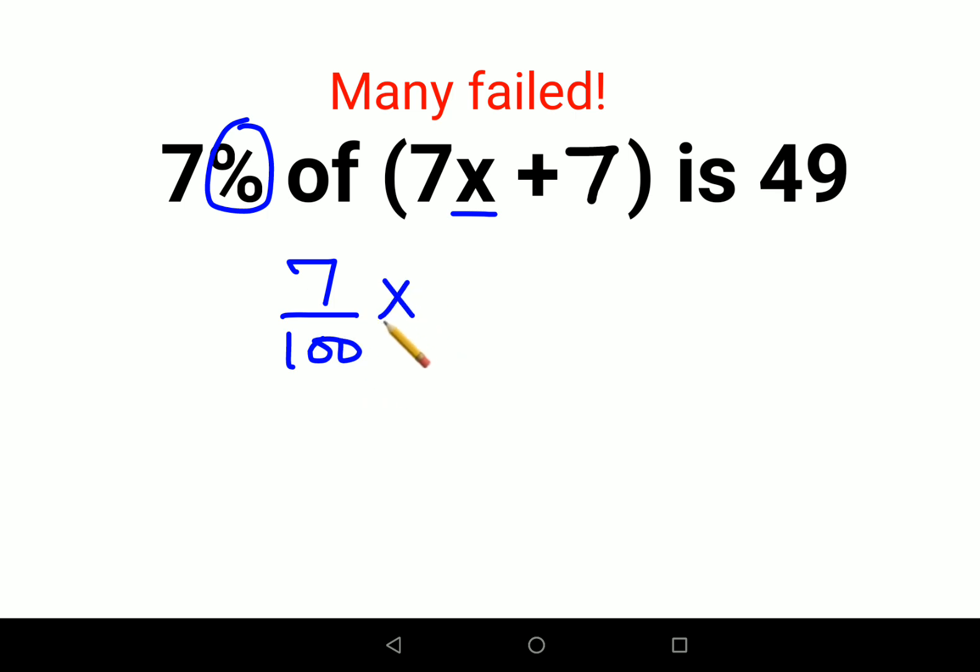Of means multiplication. We have 7x plus 7, 'is' stands for equal to 49.